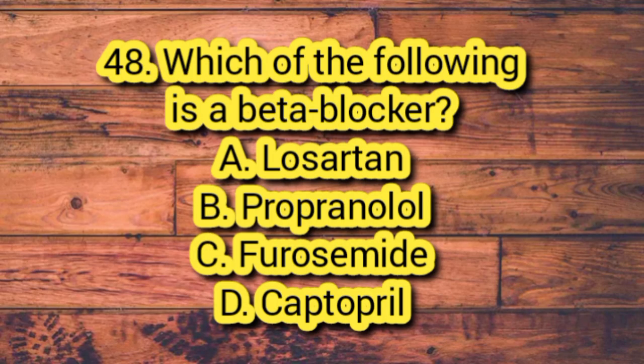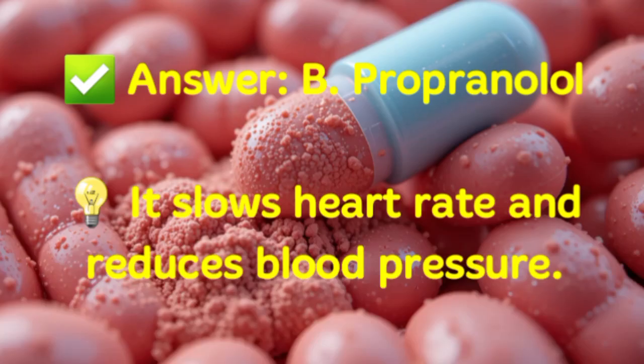Question 48. Which of the following is a beta blocker? A. Losartan. B. Propranolol. C. Furosemide. D. Captopril. Answer: B. Propranolol. It slows heart rate and reduces blood pressure.